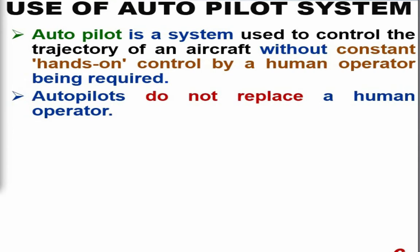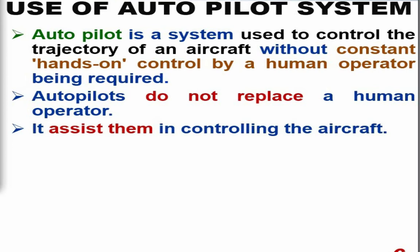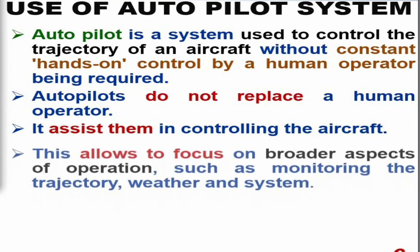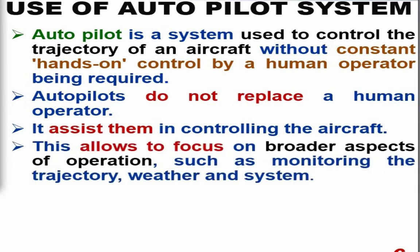Autopilots do not replace a human operator. An aircraft equipped with an autopilot system must also have a human operator — the pilot is still present in the cockpit. The autopilot system acts as an assistant to the pilot, allowing the pilot to focus on broader aspects of operations such as monitoring trajectory, weather, and systems.